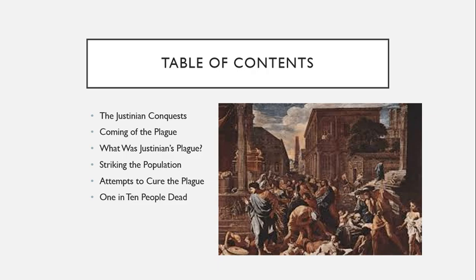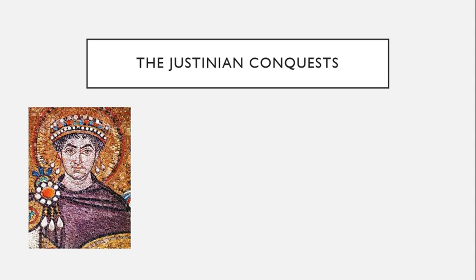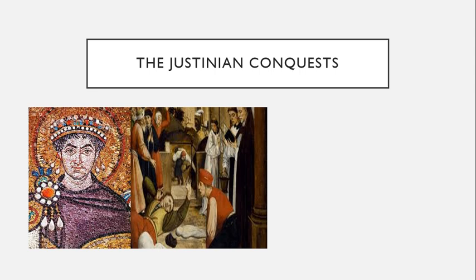When Emperor Justinian took the throne in 527 AD, he ruled only half the empire that Augustus had 500 years before. Barbarian kings had carved up the west 50 years before Justinian's time. But over the first decade of his rule, Justinian reconquered North Africa and Italy. Yet a plague would bring his restoration to a halt.